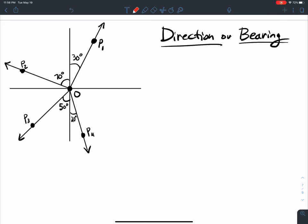In navigation and surveying, the direction or bearing from a point O to a point P equals the acute angle, less than 90 degrees, between the ray OP and the vertical line through O.